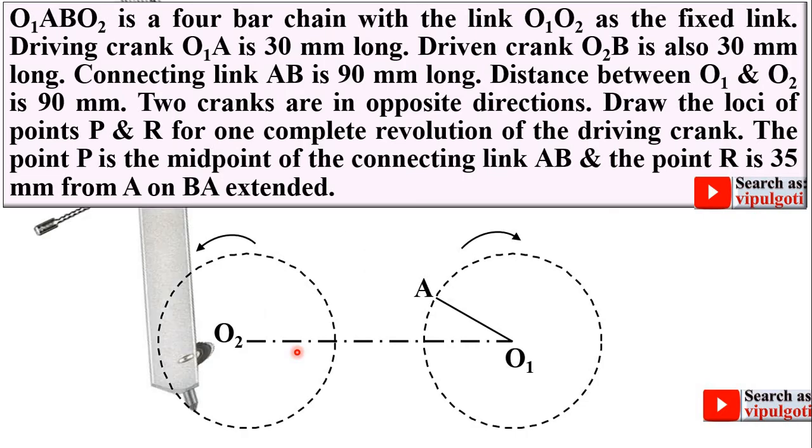Now with the help of the compass you can draw the arc on this circle with center A and radius equal to AB, and that is given to you. Connecting link AB is 90 mm.